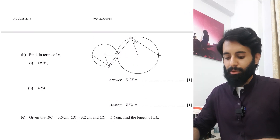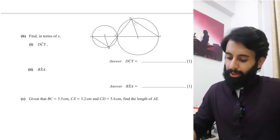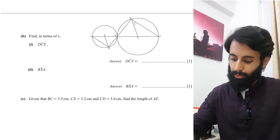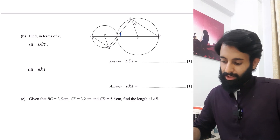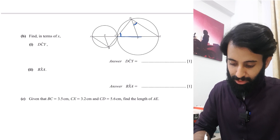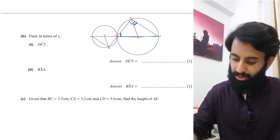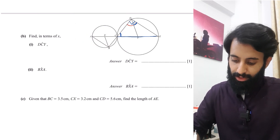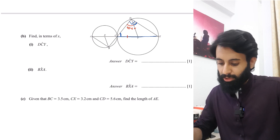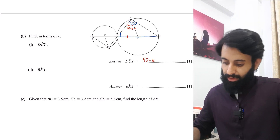Moving to part B, we use angle properties of circles to find angle DCY in terms of x. Since angle YDE equals x and the line passes through the center, the angle in a semicircle is 90 degrees. So angle CDY equals 90 minus x. Because triangle DCY is isosceles, angle DCY also equals 90 minus x.